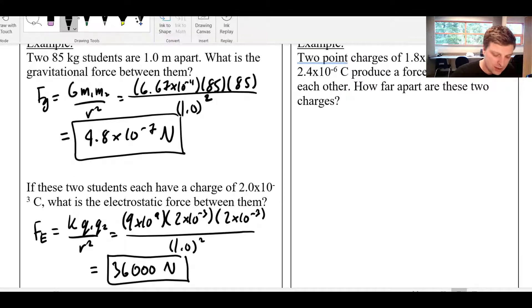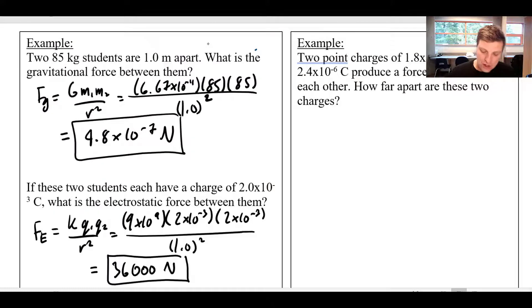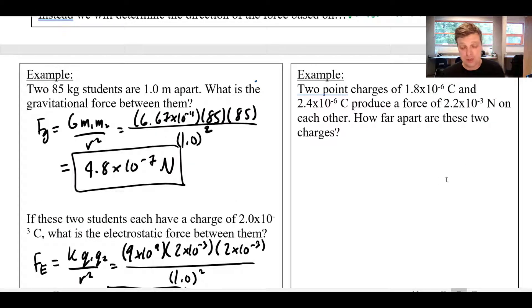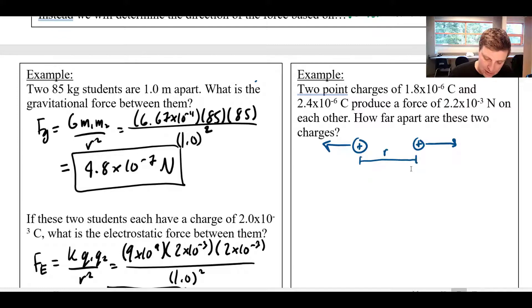Let's take a look at another example here. So we've got two point charges of 1.8 times 10 to the negative 6 coulombs and 2.4 times 10 to the negative 6 coulombs, produce a force of 2.2 times 10 to the negative 3 newtons on each other. How far apart are these two charges? So they're both positive charges, and so they're going to produce a repulsion. I know that they're pushing each other apart. And I can see how much force that's generating. The question here is, what is their separation? So what is their r value? How far apart are they?